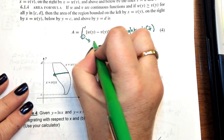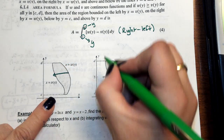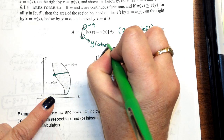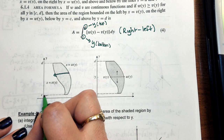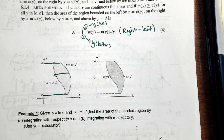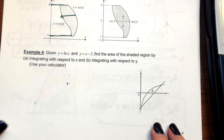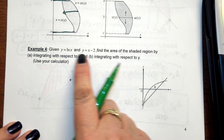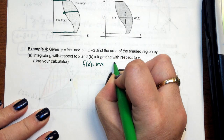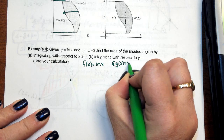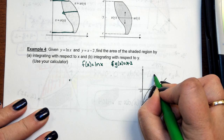Your bounds will now be in terms of Y. The lower bound will be the Y value on the bottom — that's your C value — and the upper bound is the Y value on the top, your D value. Here's an example where we're given the graph of natural log of X and X minus 2. I'll call F of X as the natural log of X, and G of X equals X minus 2. The line is G of X, and the natural log function is F of X.